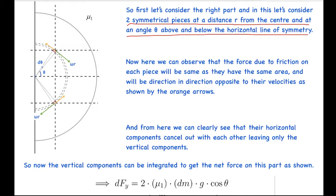So we have considered two pieces, theta degree above and below the line of symmetry and which are at a distance of r. Now here we can observe that the force due to friction on each piece will be same as they have the same area and will be in direction opposite to their velocities as shown by the orange arrows.